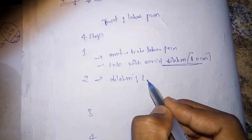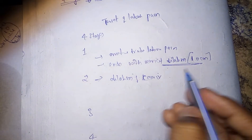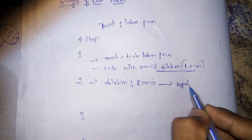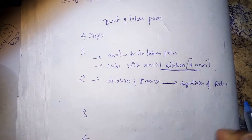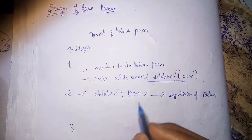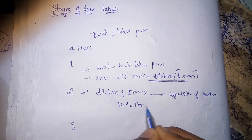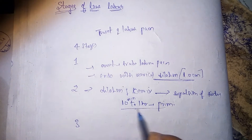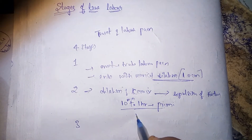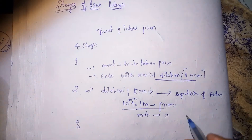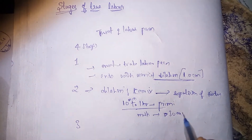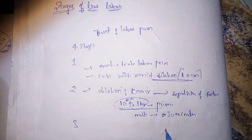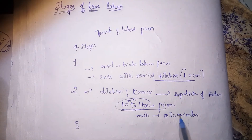The second stage of labor starts with full dilation of the cervix to the expulsion of the fetus. The duration for this second stage is 10 minutes to 1 hour in primigravida, whereas in multigravida it is 30 minutes.